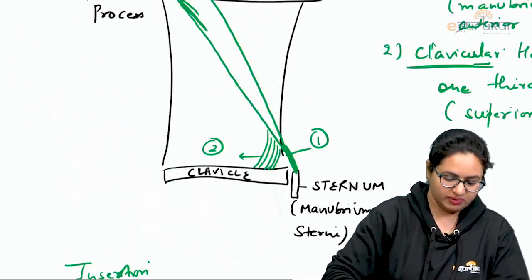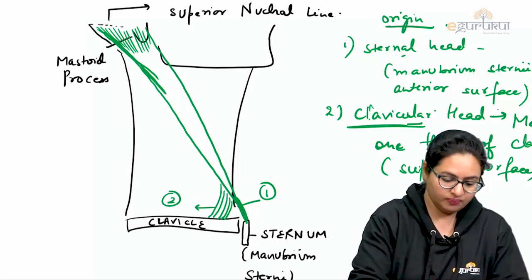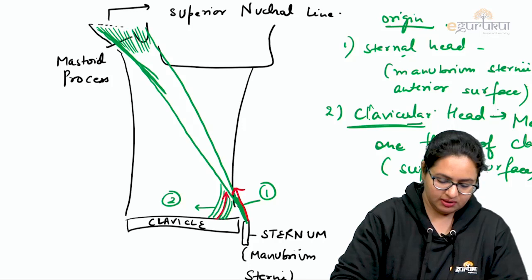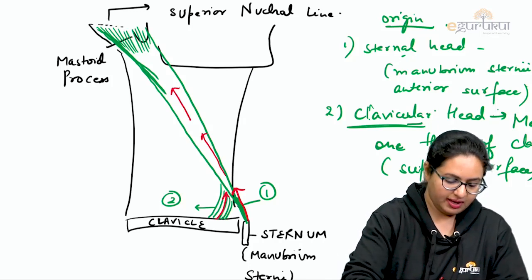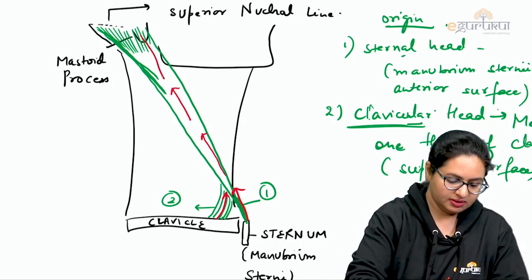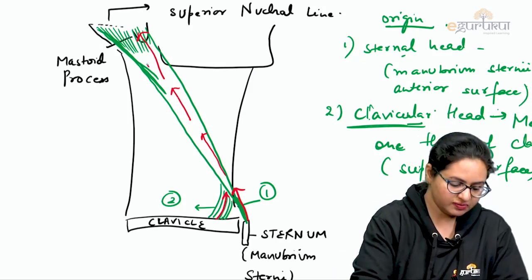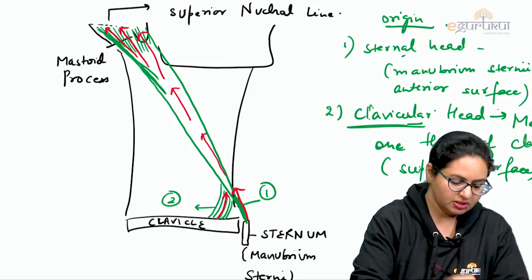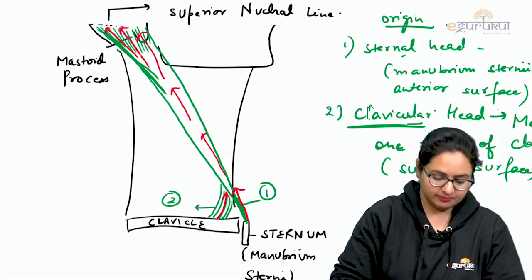To summarize, the fibers originate from the sternum as well as from the clavicle, then run upwards and are inserted into the outer aspect of the mastoid process, as well as towards the lateral one-third of the superior nuchal line.